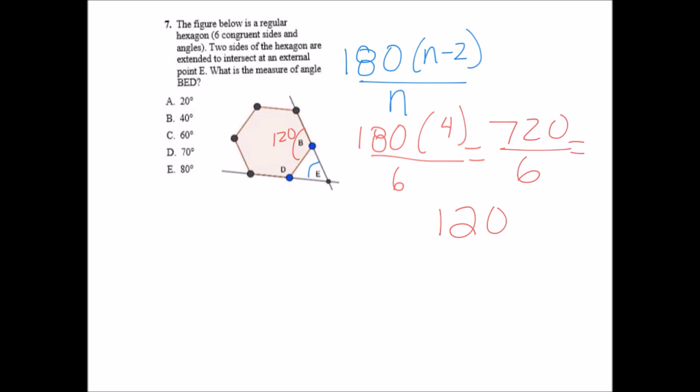So the measure of the angles here are 120. This is 120, which means the measure on the angle of the other side of that line is 60. And this one also has to be 60. So if this one is 60 and this one is 60, the last angle to add up to 180 degrees also has to be 60. The correct answer is C.